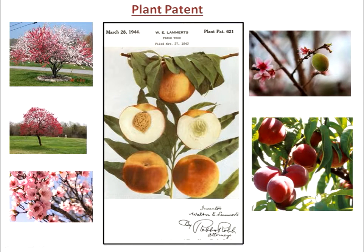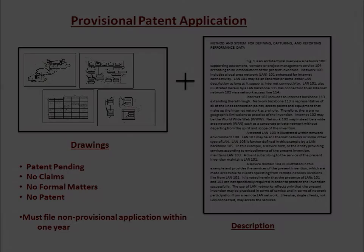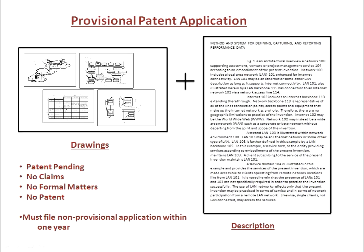Plant patents constitute a very small portion of patents issued — for example, fewer than 2,000 in 2012. We cannot show you a provisional patent because there actually isn't any such thing.